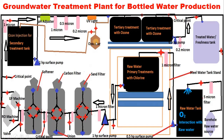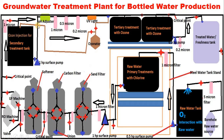After O₃ is fully generated, close this valve, open this valve, and the generated ozone is injected into the secondary treatment tank. Within four minutes, ozone completes its contact time and oxidizes whatever remains in the water. A 1 horsepower surface pump then pushes the water into the pH adjuster.